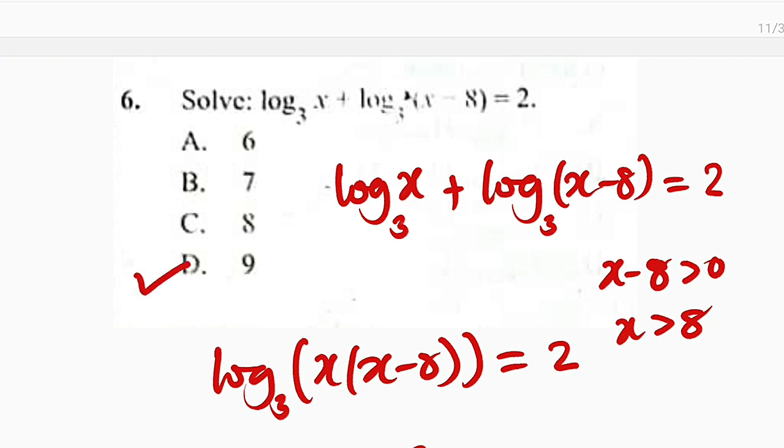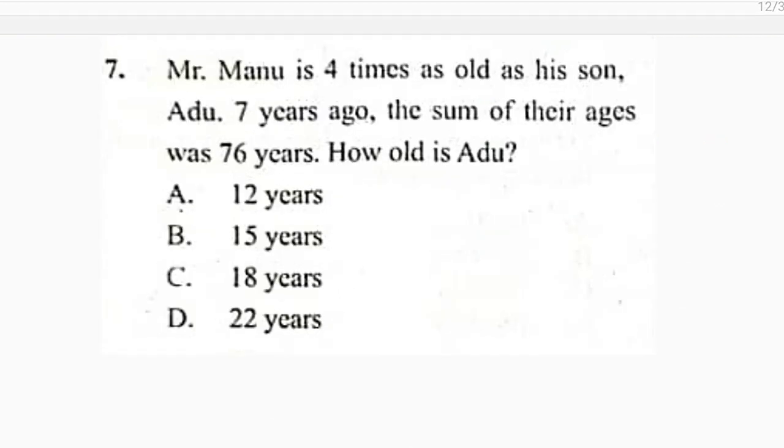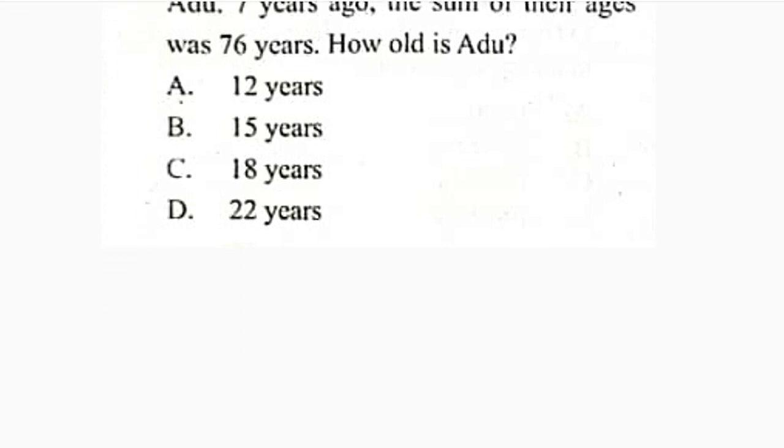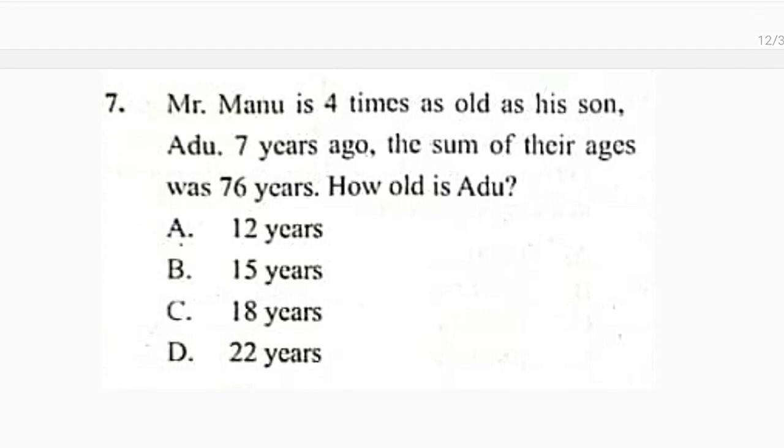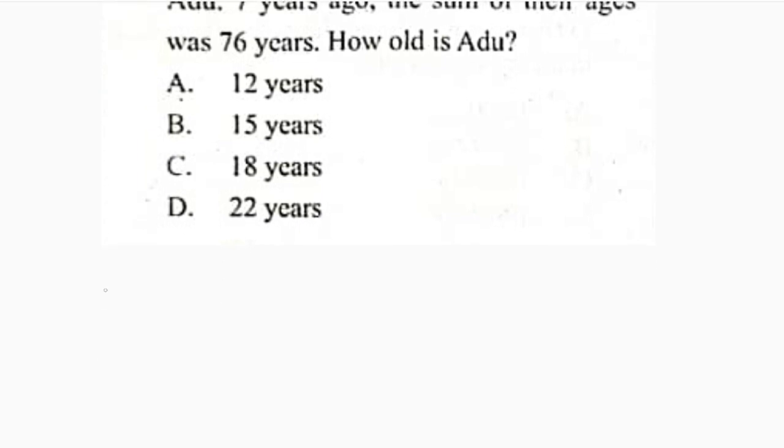Now let us move on to question number 7. Alright, here is question number 7. The question reads, Mr. Manu is 4 times as old as his son, Ardu. 7 years ago, the sum of their ages was 76 years. How old is Ardu, which is the son? Okay, I would like to declare the son's age, the current age, as x. So let Ardu's age be x.